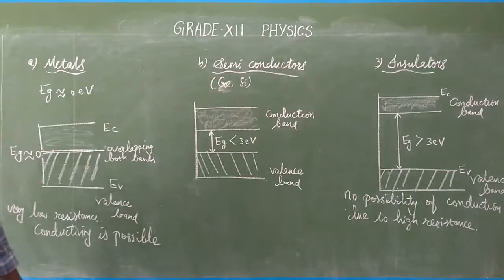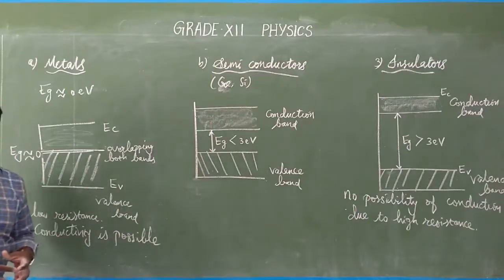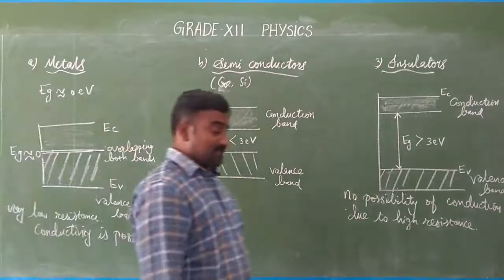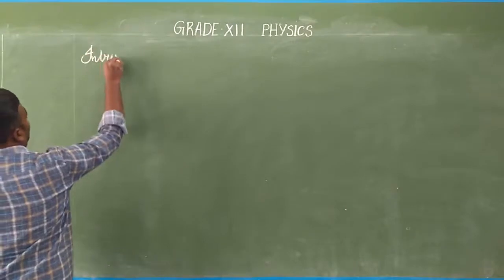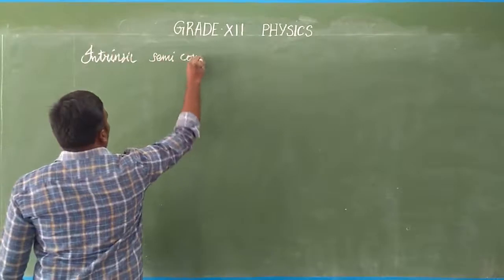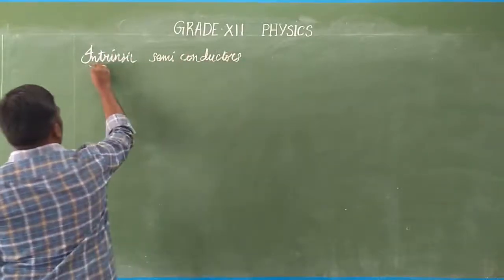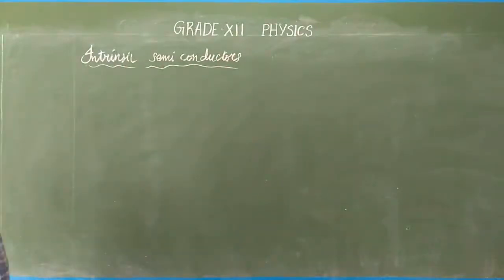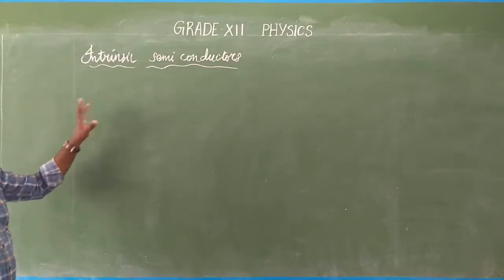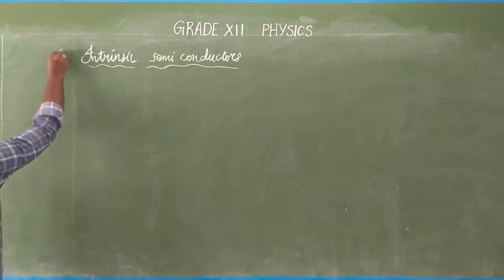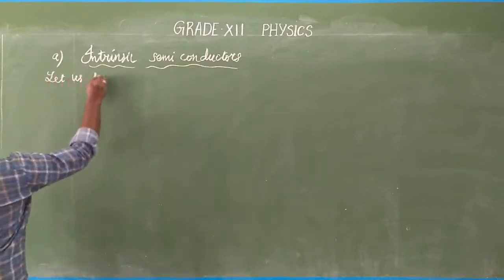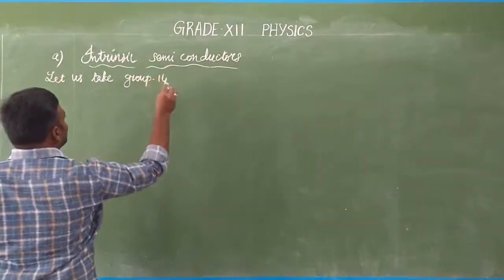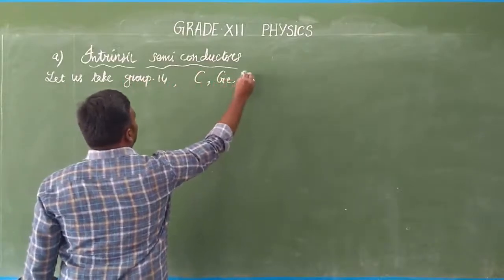Next, we are going to study semiconductors in detail. Semiconductors are classified into two types: intrinsic and extrinsic. There are two main types we are going to deal with in this lesson. For intrinsic semiconductors, let us take the example of group 14 elements — carbon, germanium, and silicon.